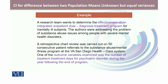Let's take an example. A research team wants to determine the effectiveness of an integrated outpatient dual diagnosis treatment program for mentally ill subjects. The authors were addressing the problem of substance abuse issues among people with severe mental health disorders. For this, they conducted a retrospective chart review for 50 individuals at VA San Diego Health Care Systems. One of the outcome variables examined was the number of inpatient treatment days for psychiatric disorders during the year following the end of the program.